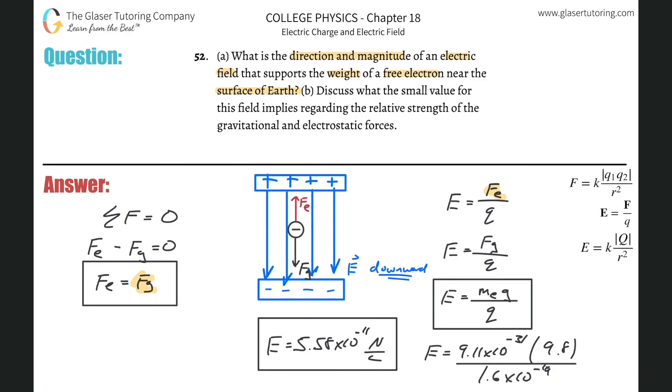All right. It says, letter B, discuss what the small value for this field implies regarding the relative strength of the gravitational and electric forces. So electric forces are a lot stronger. There you go.